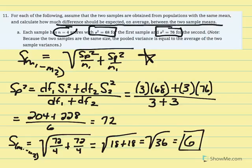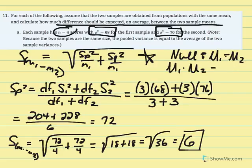What we just solved: if the null is true — mu1 equals mu2, or mu1 minus mu2 equals zero — the expected or average difference between the two sample means is 6 points. It's not always going to equal zero because of sampling error and chance. This gives us an average difference we'd anticipate if the null is true. We'll use that going into the next part of problem 11.